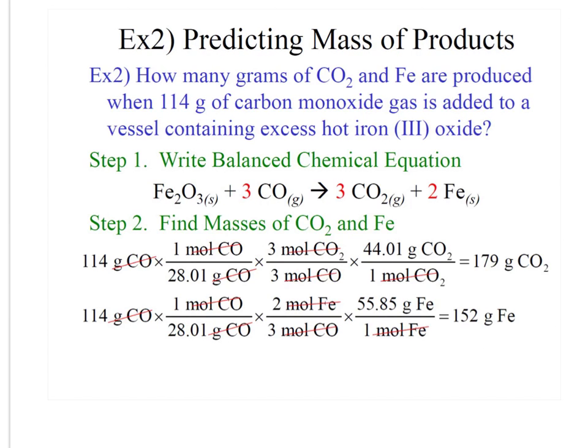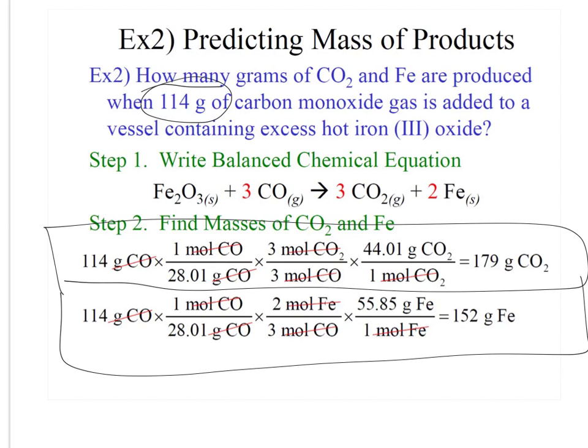How many grams of carbon dioxide and iron are produced when 114 grams of carbon monoxide gas is added to a vessel containing excess hot iron 3 oxide? So write your balanced equation. And then you're going to find the masses of both products that are produced. They gave us our starting material. So in this first problem, I'm going to go from 114 grams of carbon monoxide to grams of carbon dioxide. Then I'm going to set up a new problem. I still have to start with what they give me, 114 grams of carbon monoxide, convert to grams of iron.